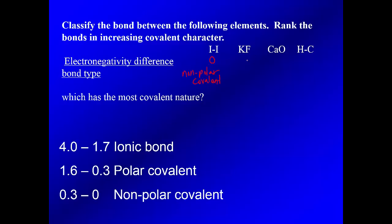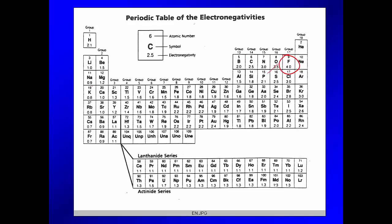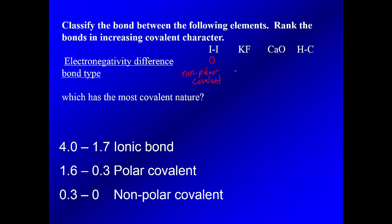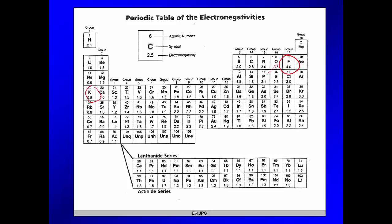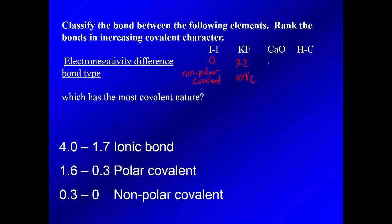So between potassium and fluoride. Potassium is over here at a 0.8. Fluoride we know is a 4. Net difference. Just subtract so you get a positive number. We don't want negatives. So that is a difference of 3.2. So that falls in the ionic range. Calcium oxide. Same thing. Calcium is a 1.0. Oxygen 3.5. So that falls in the 2.5. Again, ionic range.